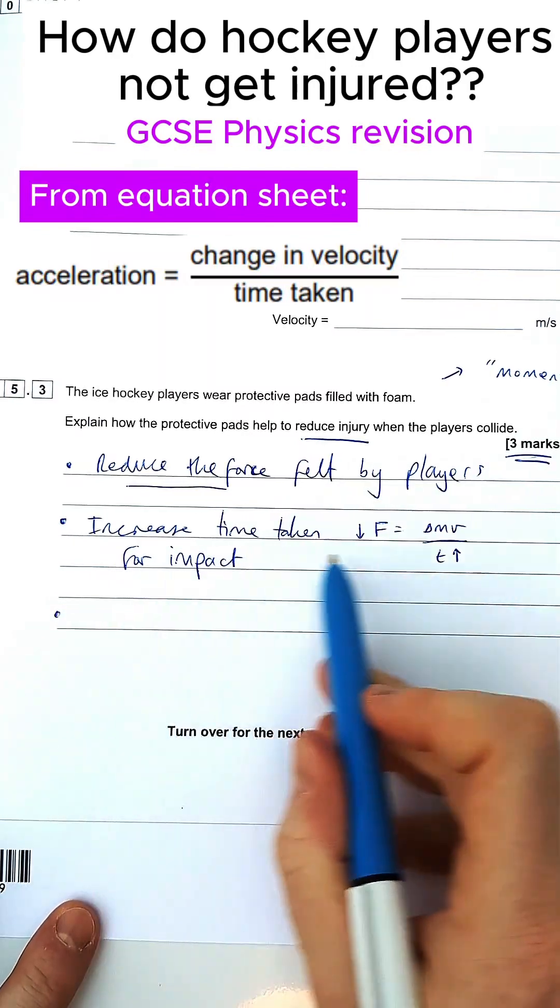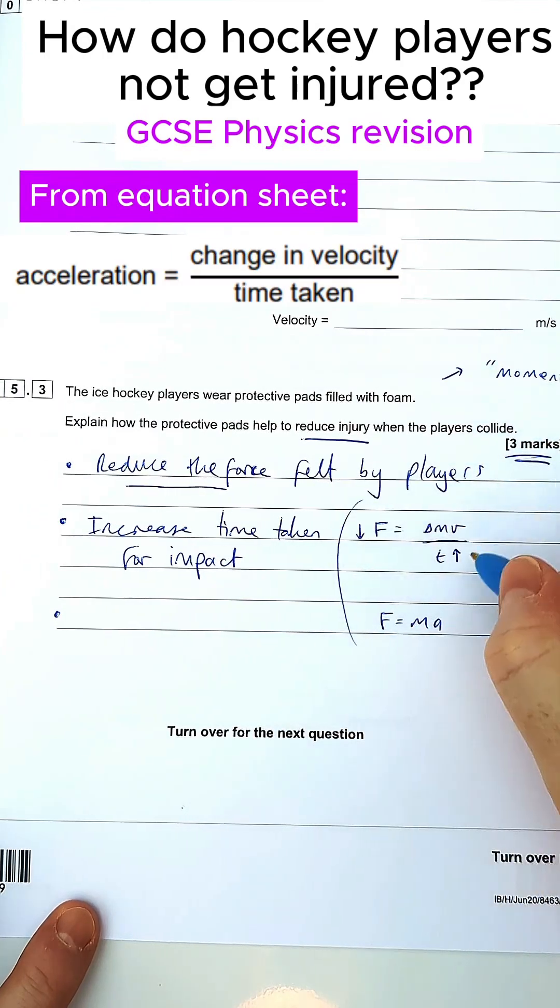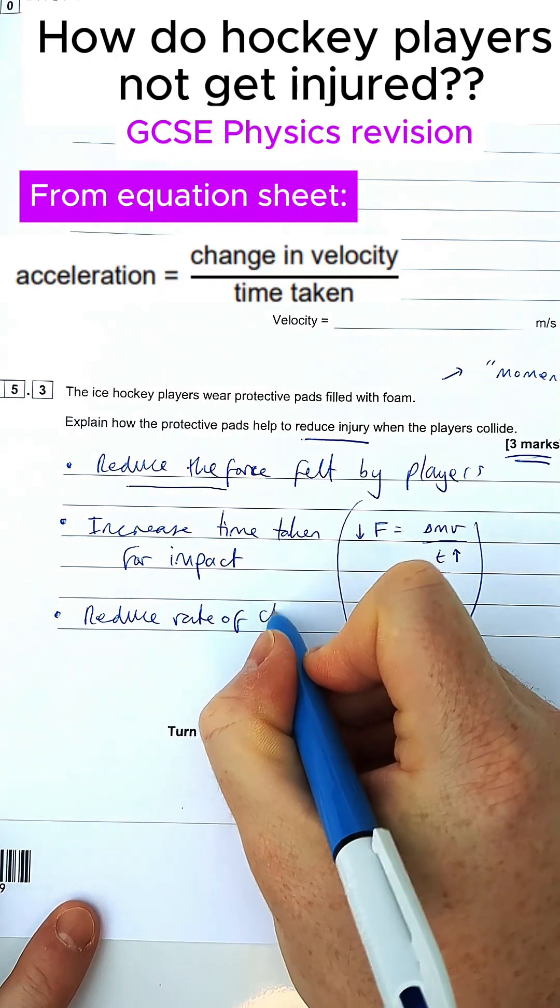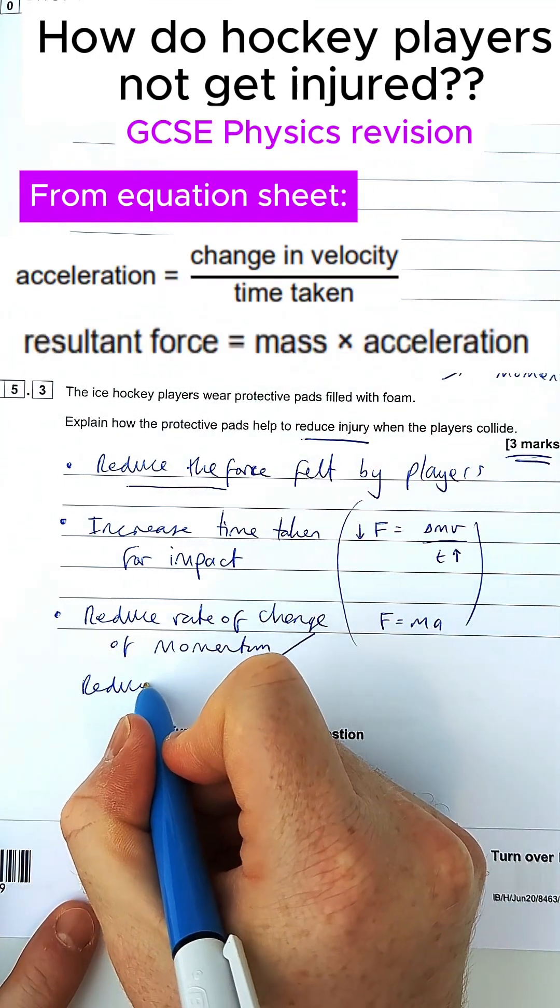Now, the third mark always comes from either this equation or from F equals MA. So there's two ways of saying it. You can either say we've got to reduce the rate of change of momentum or reduce the acceleration.